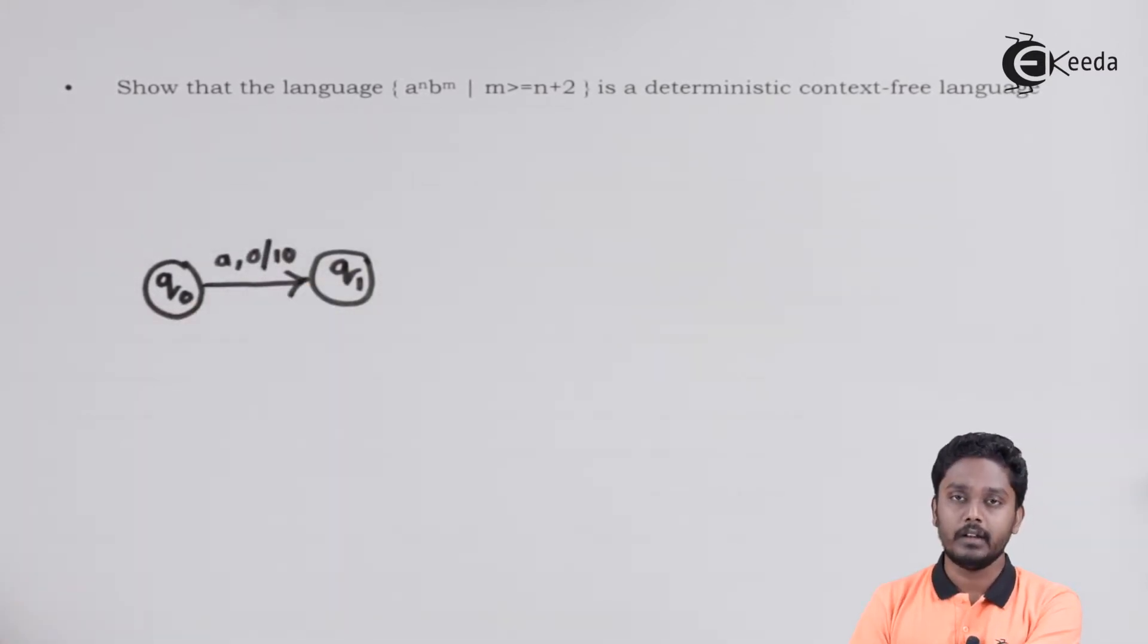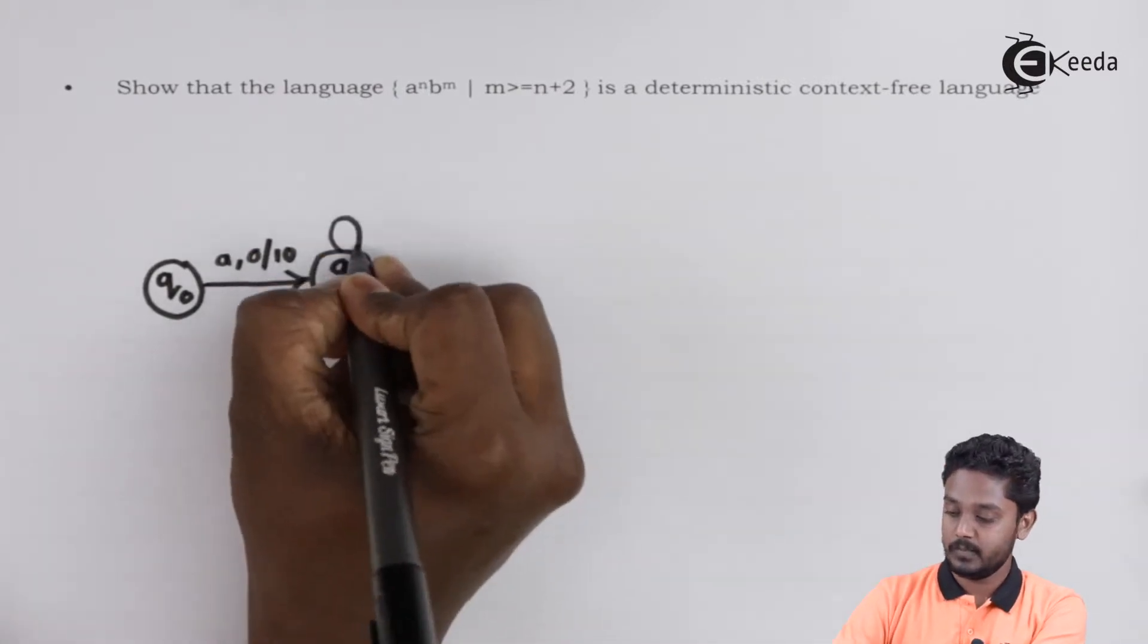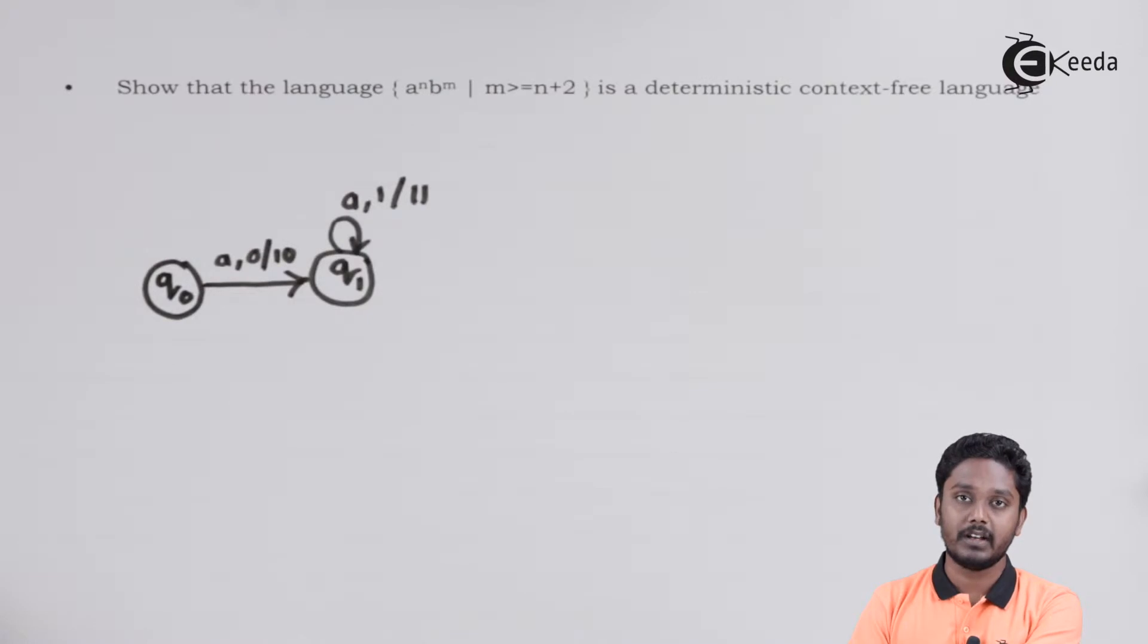In state Q1, I will push a 1 for every encounter of A. As soon as I start getting B, I will go to the next state, Q2, by popping out 1 symbol from the top of the stack.